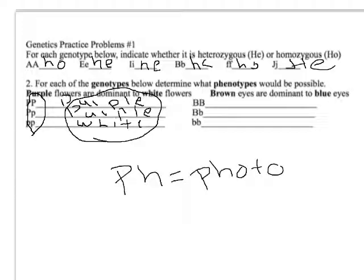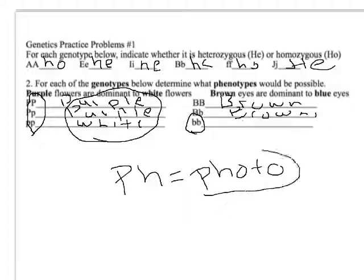Brown eyes are dominant to blue eyes. Uppercase B, uppercase B codes for brown — this person is homozygous dominant and expresses brown. Uppercase B, lowercase b is heterozygous but still expresses brown because brown is the dominant trait. Lowercase-lowercase is the genotype whose phenotype is blue eyes, and that's the only time you see it because it's a recessive trait.